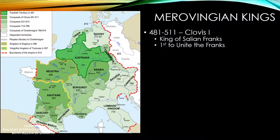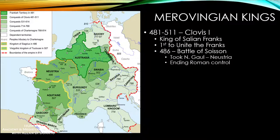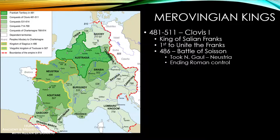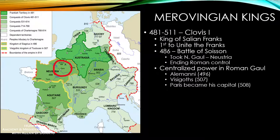Clovis was the first important Merovingian king and the first to begin unifying the Franks. At the Battle of Soissons around 486, he defeated the last Roman army in northern Gaul under Roman general Syagrius, taking the territory of northern Gaul — which became known as Neustria — into the kingdom. This was effectively the end of Roman control outside of Italy, a good decade after the traditional collapse of Rome in 476.